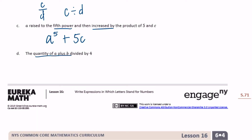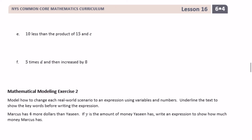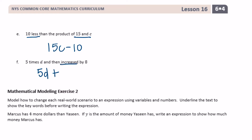The quantity of a plus b: we keep a plus b together in parentheses, divided by four — or written as (a+b) over 4. Then 10 less than the product of 15 and c: 'less than' means subtracting, so the product of 15 and c is 15c, then minus 10. Finally, 5 times d increased by 8: 5d plus 8.